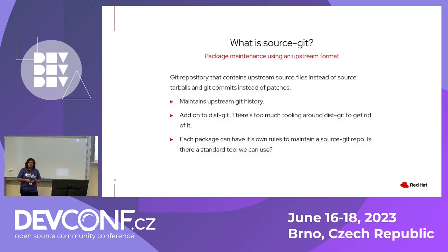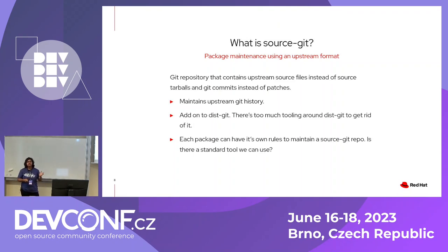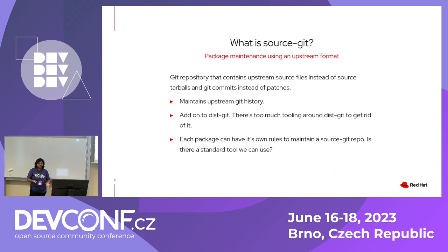So what is sourcegit? Sourcegit tracks upstream source history. You can consider it as equivalent to distgit, except that instead of source tarballs, we directly work with upstream source files. And instead of downstream patches, you apply them as git commits on top of your upstream source code. So it maintains upstream git history and could be treated as an add-on to distgit in day-to-day use for package maintenance.